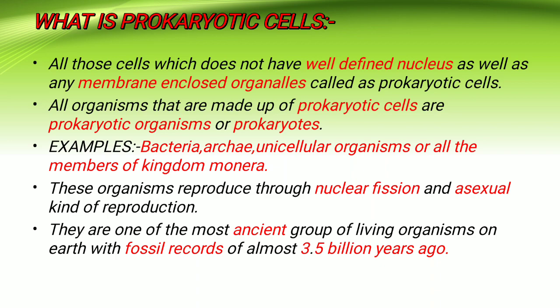How do prokaryotic organisms reproduce? They reproduce by asexual kinds of reproduction. Different types of asexual reproduction include binary fission, etc. All these things are called asexual kinds of reproduction, which we will read in the next standard.